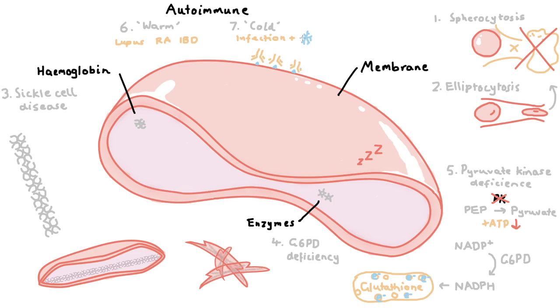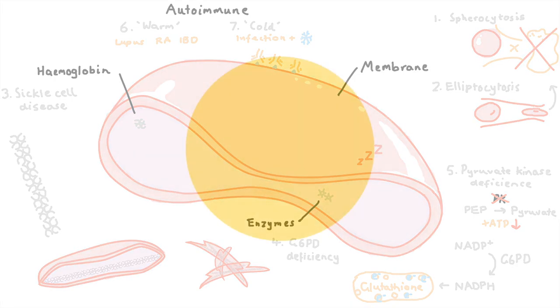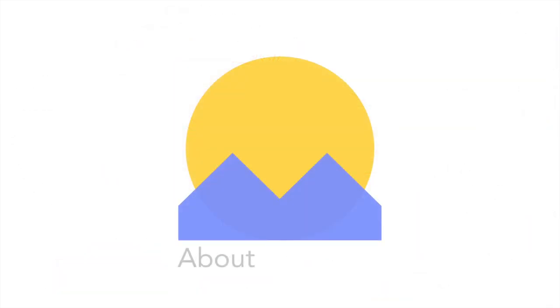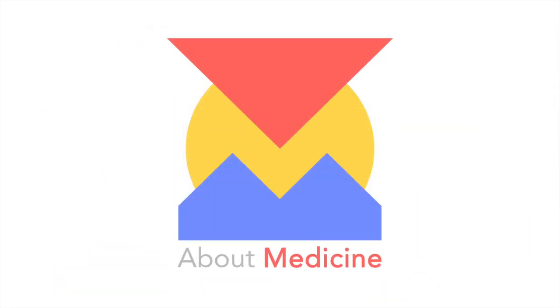So there you go, seven types of hemolytic anemia. I hope you enjoyed that. Stick around for our next video on how to diagnose hemolytic anemia. Thanks for watching — hit subscribe and we'll see you next time.